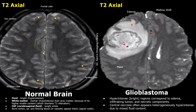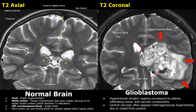Here are coronal T2 images of the brain. A large, irregularly shaped mass is present with hyper-intense and heterogeneous areas. Flow voids are also present in this case — these are the hypo-intense tubular structures.